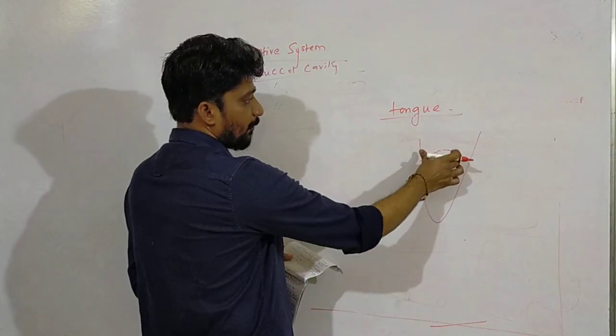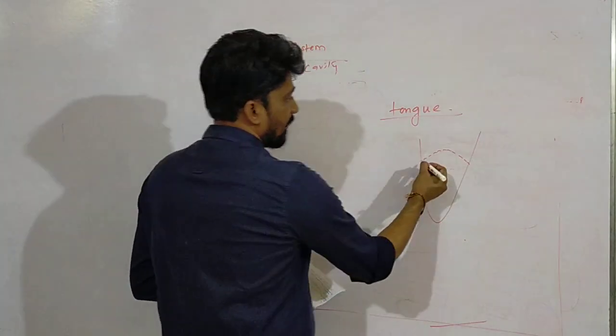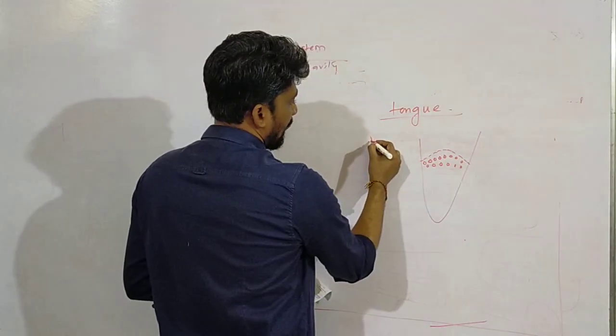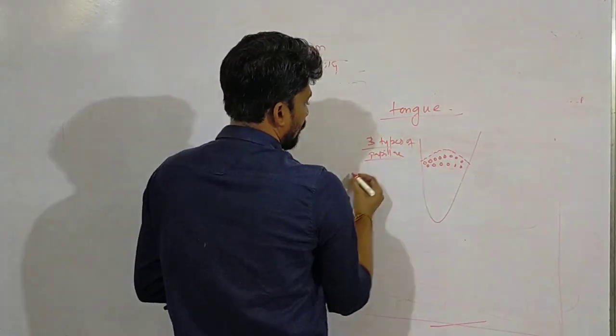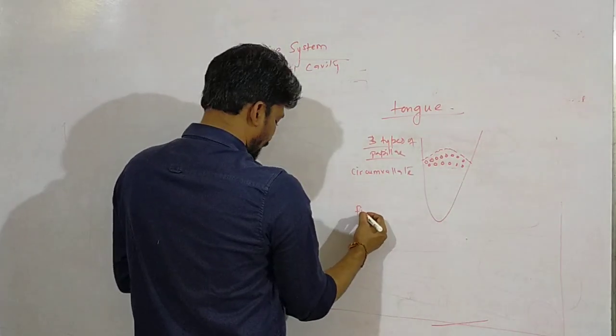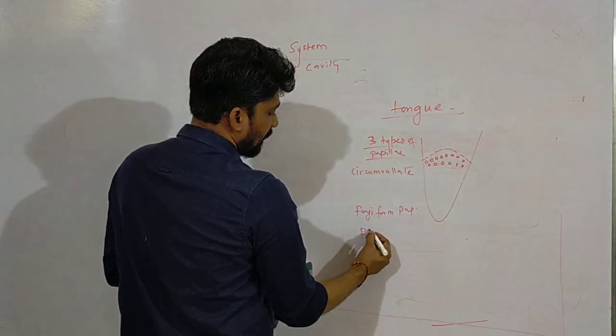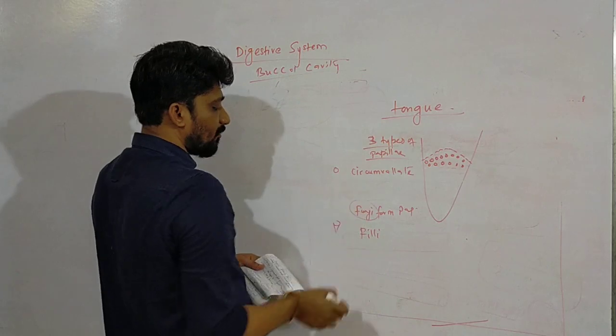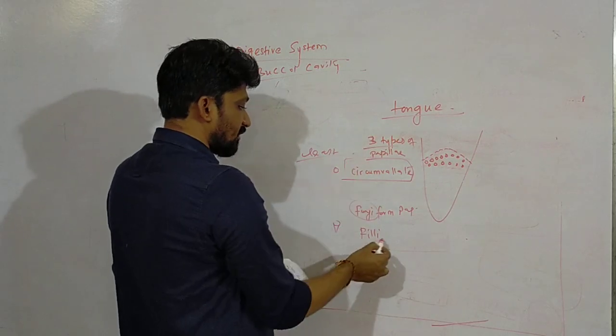Now if you see the structure of tongue, I have divided into anterior two-thirds and posterior one-third. In this two-third part we have certain important structure - we have the circumvallate papillae. There we have three types of papillae or the taste buds in the tongue: circumvallate papillae, fungiform papillae, and filiform papillae.